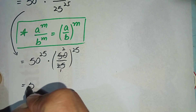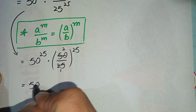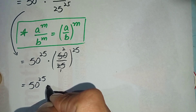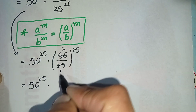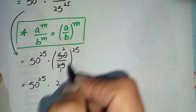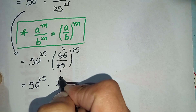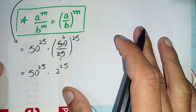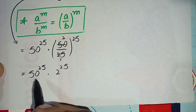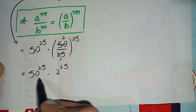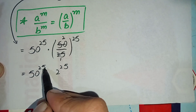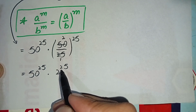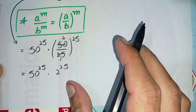So this equation will become 50 raised to power 25 times 2 raised to power 25. Now both numbers have the same power, so we will use the same power and take it common.